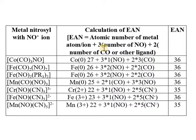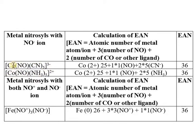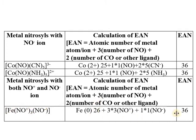Now we consider species where NO acts as NO-. For cobalt with 5 cyanide ligands and an overall charge of 3-, cobalt is in the +2 oxidation state (atomic number 27, so 25 electrons at +2). NO- is a 1-electron donor and 5 CN- ligands donate 10 electrons, so the total EAN equals 36. The next cobalt example also has cobalt in the +2 oxidation state, and the EAN again equals 36, following the EAN rule.